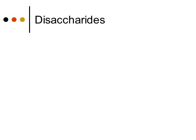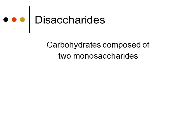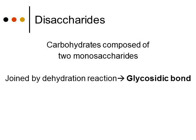If you link two monosaccharides together, you're going to get something called a disaccharide — carbohydrates composed of two monosaccharides, two of these building blocks. These monosaccharides are joined together by the dehydration reaction, and the bond that's formed between your two monosaccharides is called a glycosidic bond. This glycosidic bond can also be broken apart by the hydrolysis reaction — you just add water, and then your polymer breaks apart into the monomers.